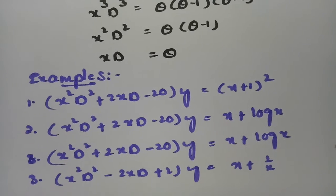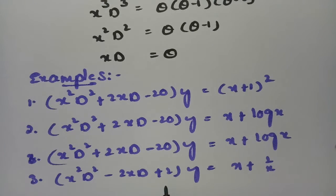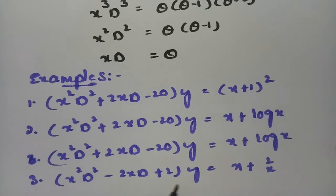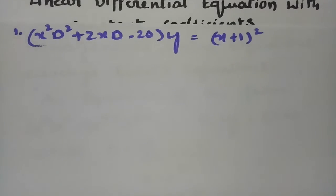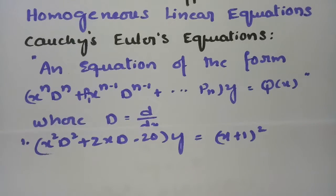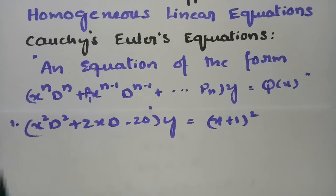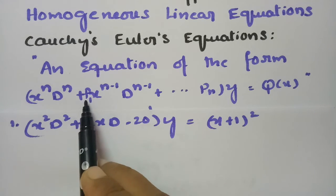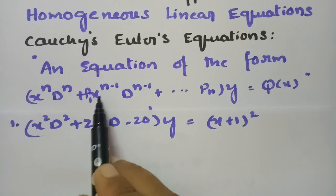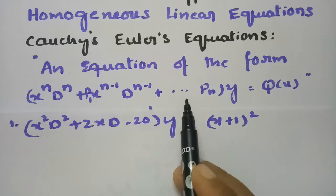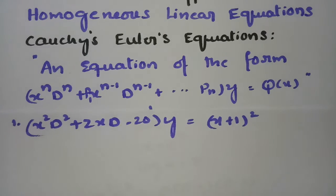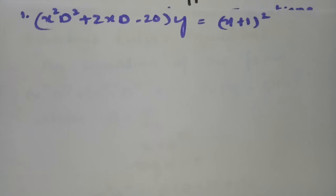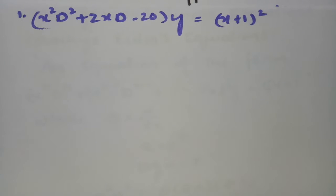Here are a few examples that I am going to solve. According to Cauchy's Euler equation, the equation is of the form x^n D^n plus a constant times x^(n-1) D^(n-1) plus ... plus pn of y equals Q(x). This is an example of the Cauchy's Euler equation.